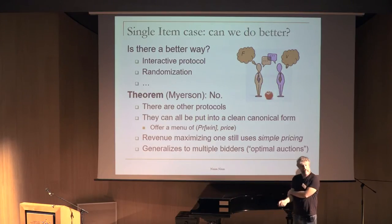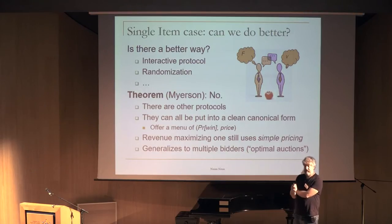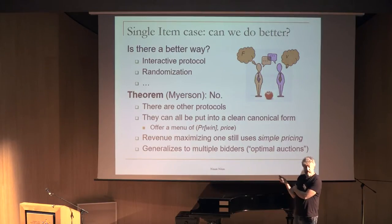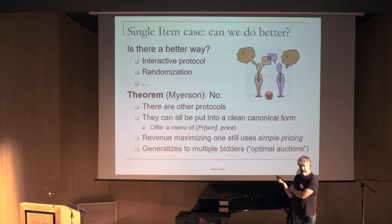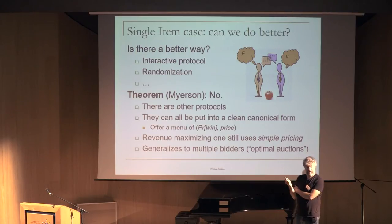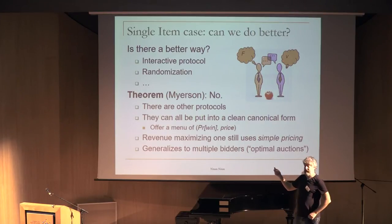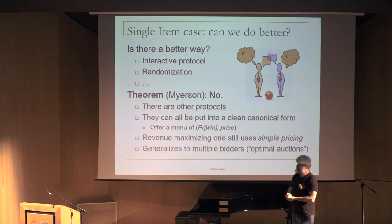The most interesting takeaway from the single-item story is that the optimal auction in terms of revenue is a simple one — just posting a price and asking the buyer whether they want to buy. Even though there are many more complicated options, none of them is going to help for this particular goal.